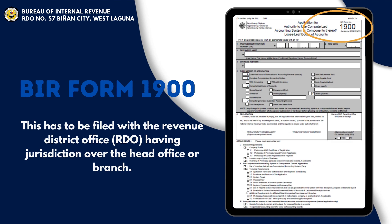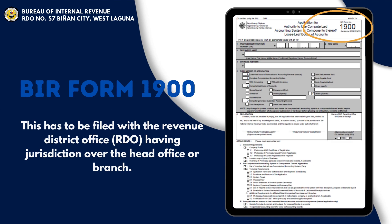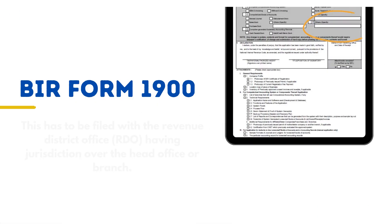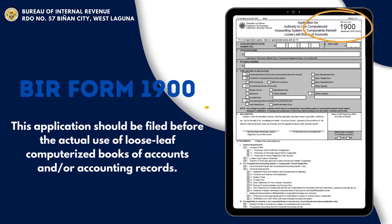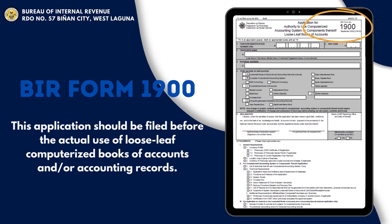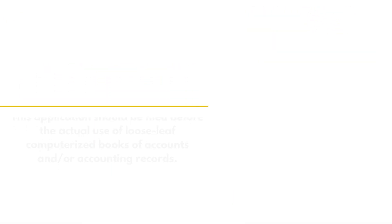This has to be filed with the Revenue District Office having jurisdiction over the head office or branch. This application should be filed before the actual use of loose-leaf or computerized books of accounts and/or accounting records.